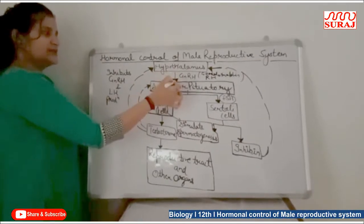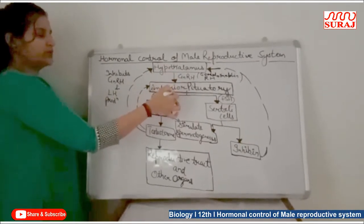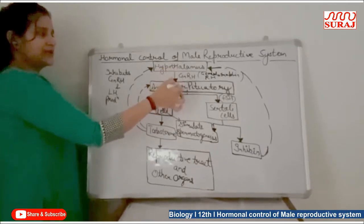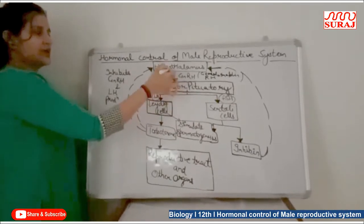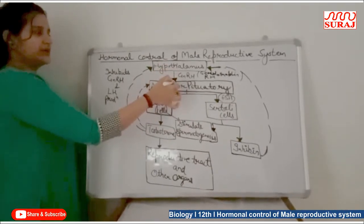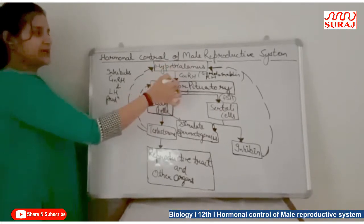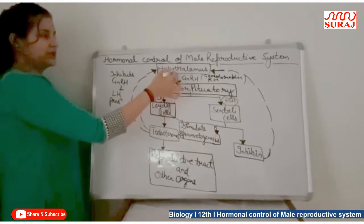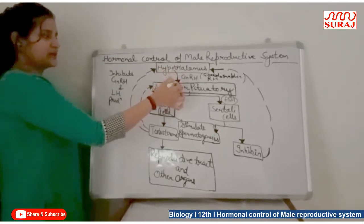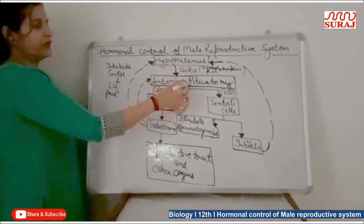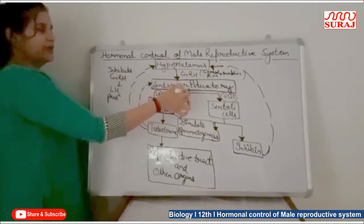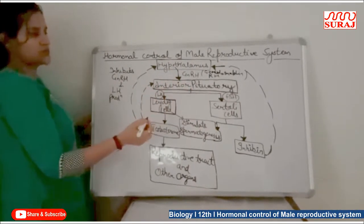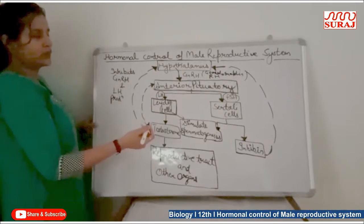This hypothalamus gland releases GnRH which acts on the anterior pituitary gland. As we read in 11th class, both these glands are attached to each other by the help of a duct. The hypothalamus releases this hormone to the anterior part of the pituitary gland, which is responsible for releasing a lot of hormones.